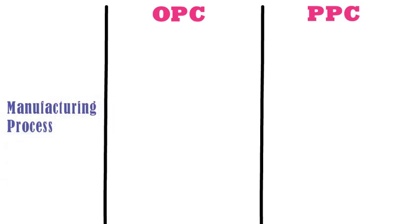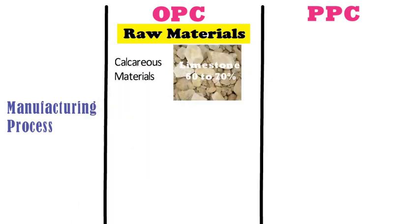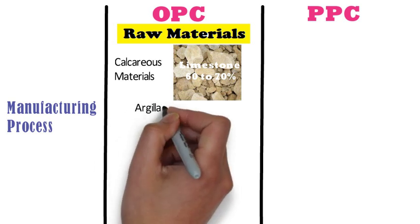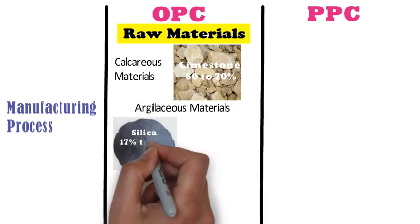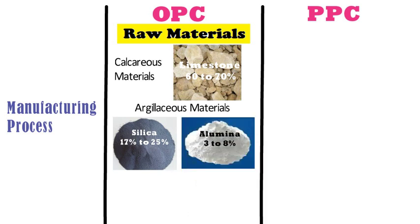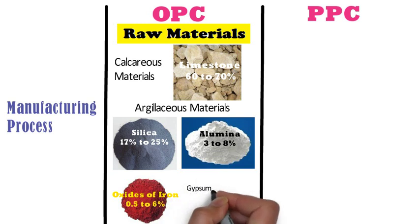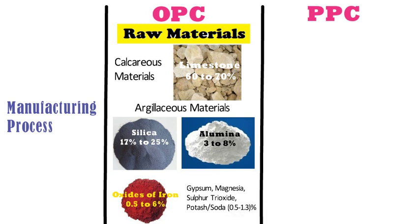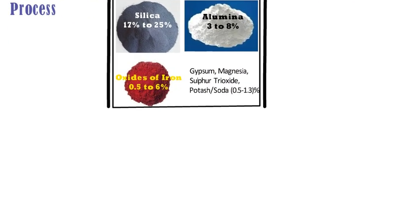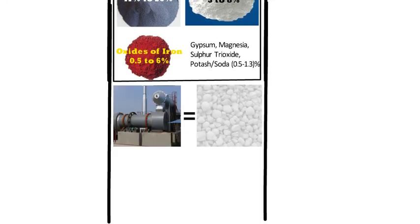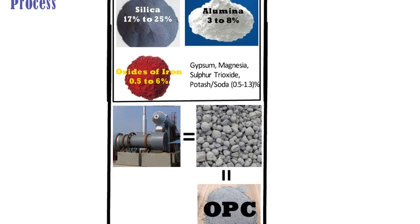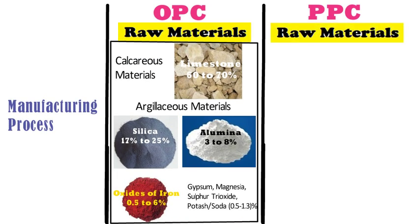Manufacturing process. The raw materials used to manufacture OPC are calcareous materials containing limestone 60–70%, argilaceous materials containing silica 17–25%, alumina 3–8%, oxides of iron 0.5–6%, and gypsum, magnesia, sulphur trioxide, potash or soda 0.5–1.3%. All these materials are mixed in a fixed proportion and heated in kilns to form clinkers, which are then ground to the required fineness to obtain Ordinary Portland Cement.